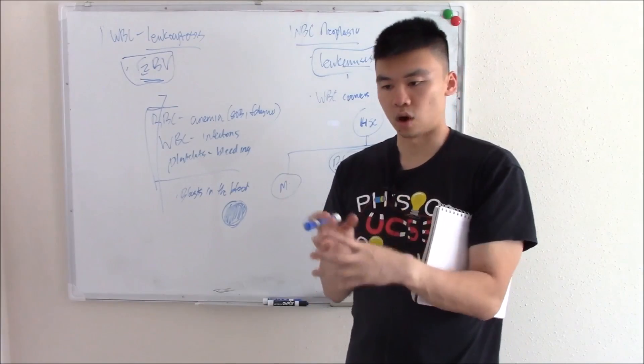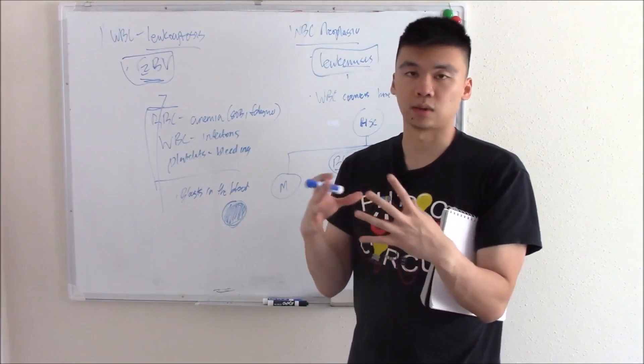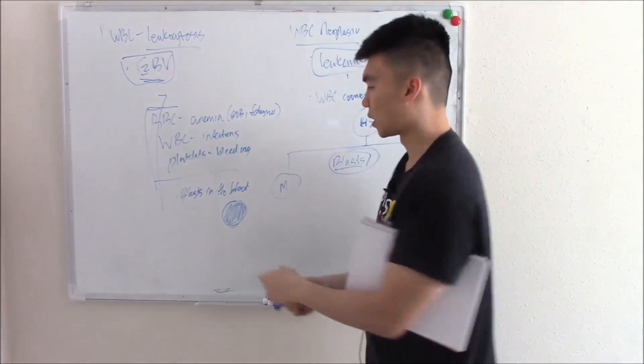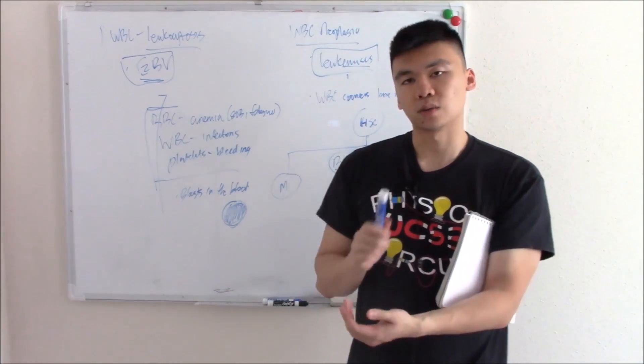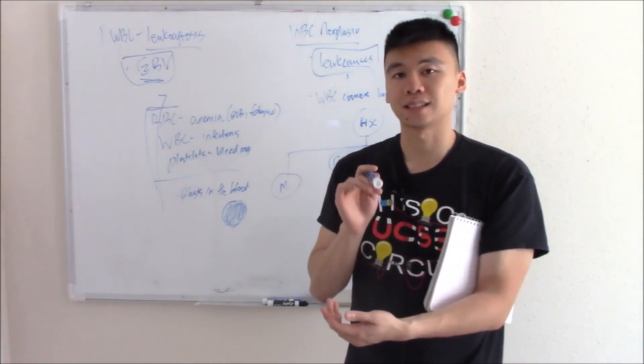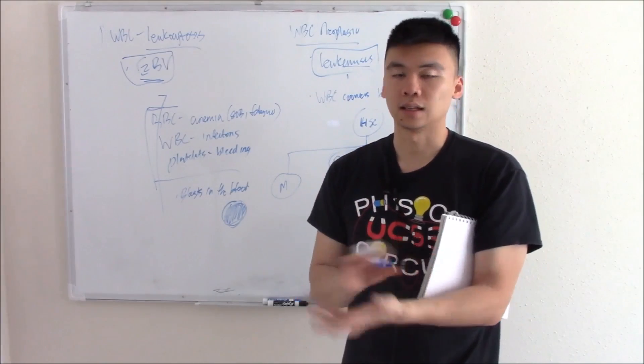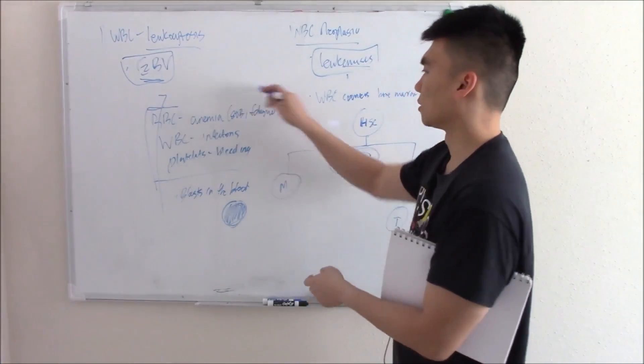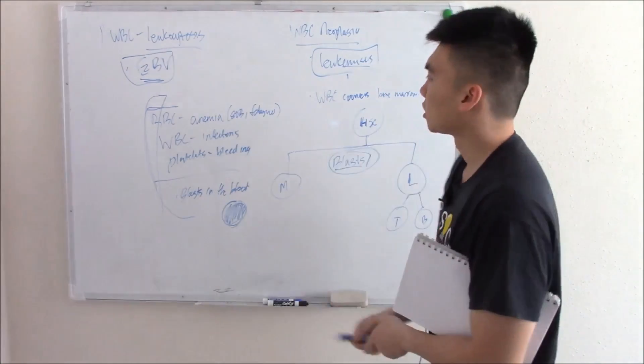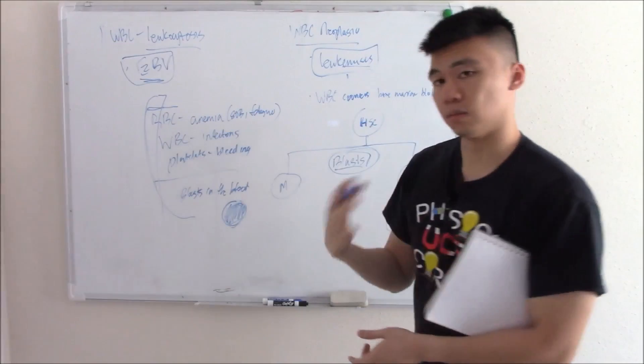The nucleus condenses and the cytoplasm ratio gets larger, but because these are immature, you just see all nucleus. There's a picture in my notes. You should be able to recognize blasts easily. They can show you a picture of blasts and you should recognize them as blasts given the context.